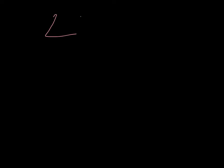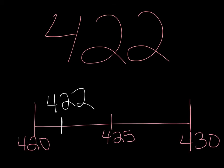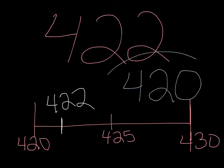Now I want you to try to put 422 on a number line. Pause the video and put 422 on the number line. Okay, your number line should look like this. I purposefully did not tell you which two tens 422 comes in between — I wanted you to look at the 2 and know that since there is a 2 in the tens place, on the left side of my number line I'm going to have 420, and the next ten is 430. 422 comes right here on the number line, so 422 is closer and nearest to 420.